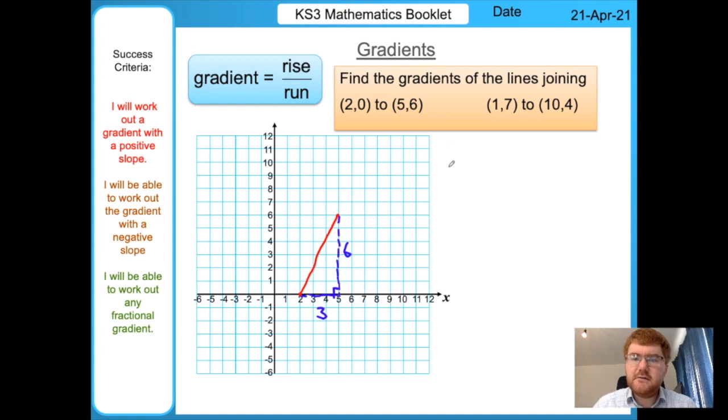As we go across we go 1, 2, 3, so this is going to be 3. The way we calculate the gradient is we do the rise divided by the run. The rise is 6, so we're going 6 upwards.